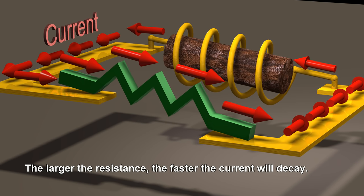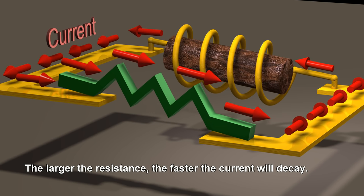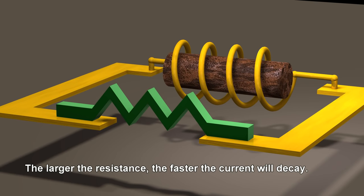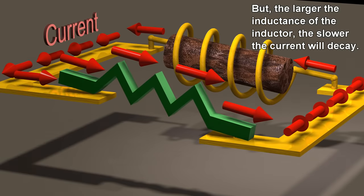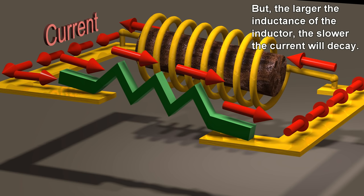The larger the resistance, the faster the current will decay. But, the larger the inductance of the inductor, the slower the current will decay.